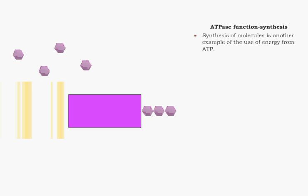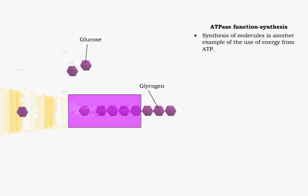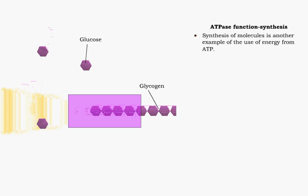A third use of ATP is in the synthesis of molecules. In this example, glycogen is synthesized from glucose by a series of enzymes.